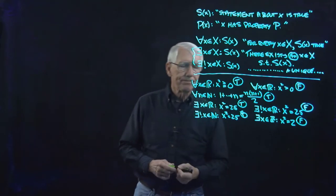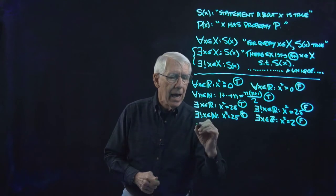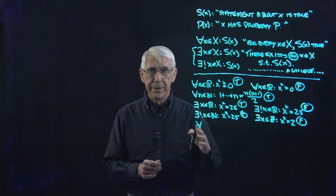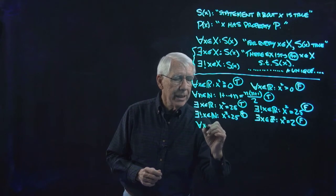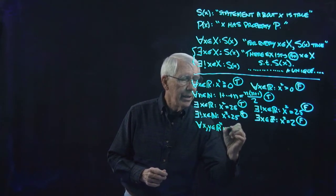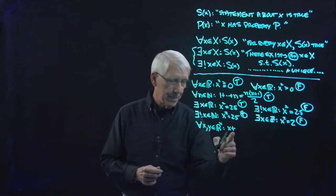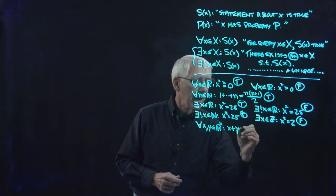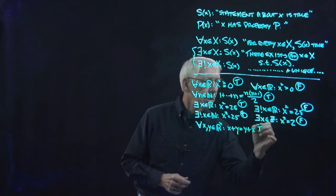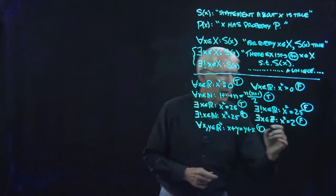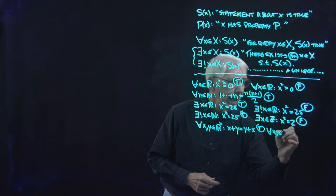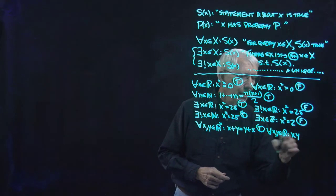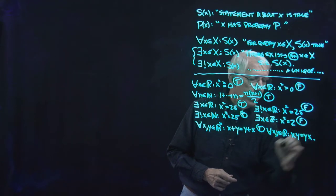Let's do a couple more. This is something we actually did in the first lecture. For every X and Y in ℝⁿ — so now I've got vectors and vector addition — X plus Y equals Y plus X. True. How about: for every X and Y in ℝ, X times Y equals Y times X, two real numbers. Also true.